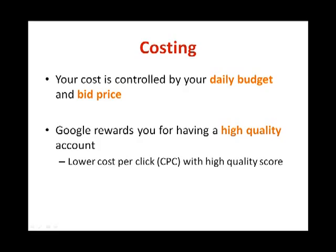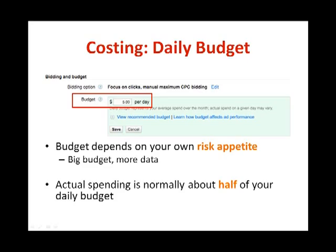Now let's talk about costing. With Google AdWords, you can control your advertising costs through a daily budget and bid prices. Google also rewards you for having a high quality account — if you have a high quality score, you pay a much lower cost per click. By setting a daily budget, you will not spend more than what you set. For example, if your budget per day is $5, Google will ensure you only spend a maximum of $5 a day. You can even start as low as $1 per day. Note that you will normally spend significantly less — often about half of your daily budget.